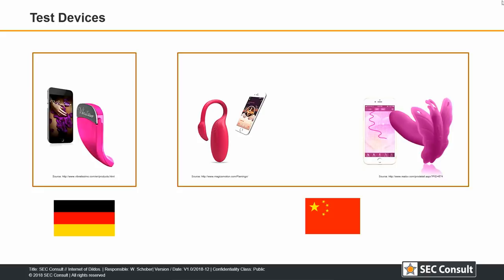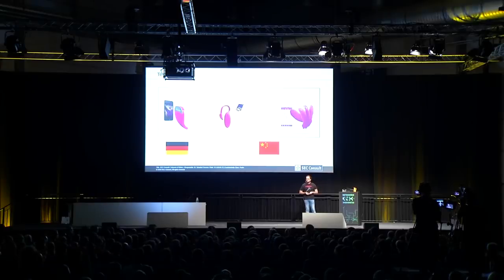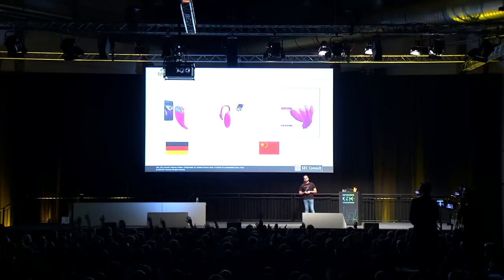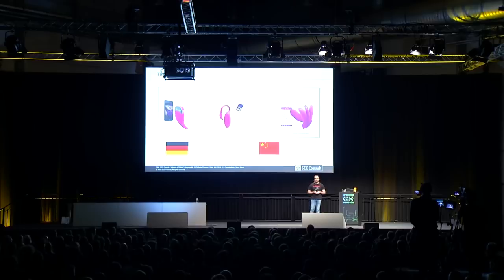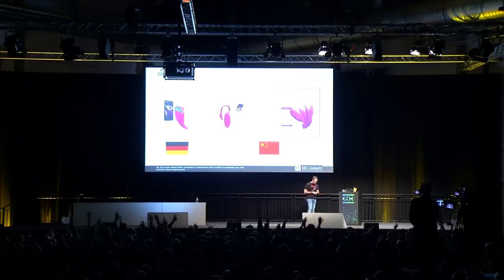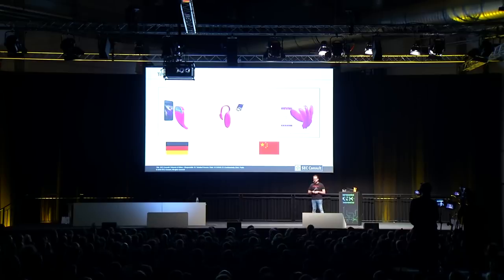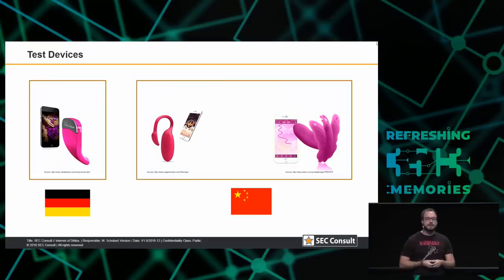I have to admit I was a little biased — I thought I'd look at the Chinese devices first because there would be a lot of low-hanging fruit. Question to the audience: who believes I found most of the vulnerabilities in the Chinese devices? Who believes in the German device? Actually, when I took a look at the German device, I found so many really critical vulnerabilities that I immediately stopped and wrote my whole thesis about the Panty Buster.